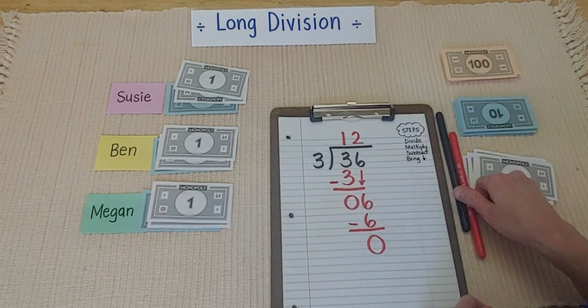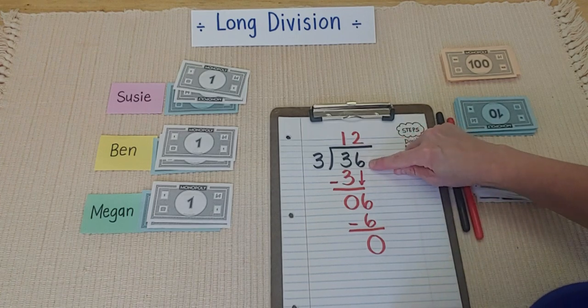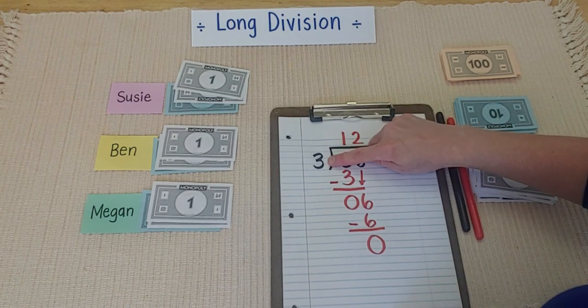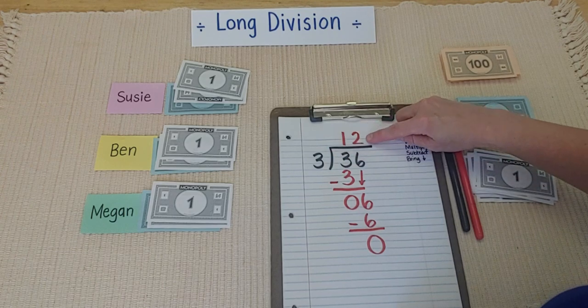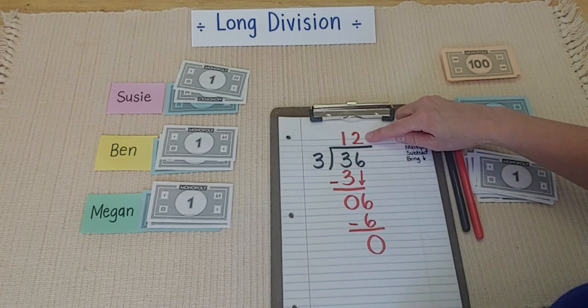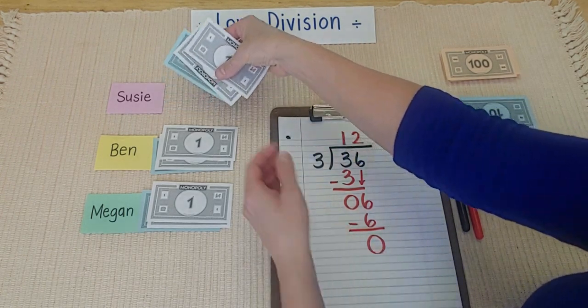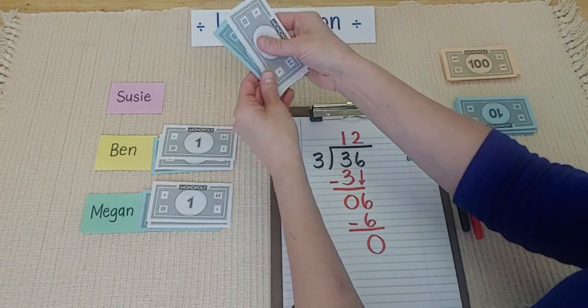And so, now you can see that this $36, I was able to share it with my three friends. And each friend got 12 all together. And I can double check. I can say, Susie got 10, 11, 12. Yep.